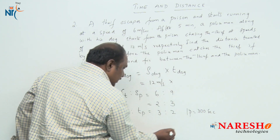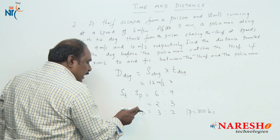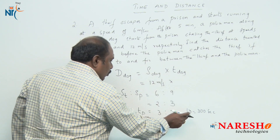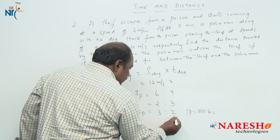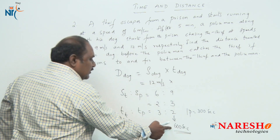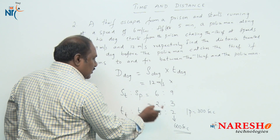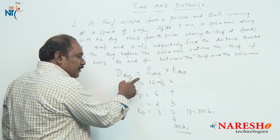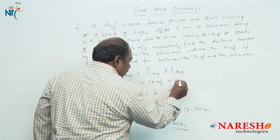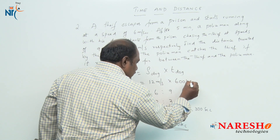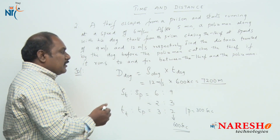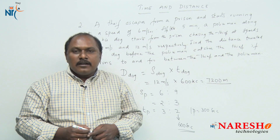So 1 part equals 300 seconds. We need the time taken by the policeman, which is 2 parts, so 2 × 300 = 600 seconds. The policeman catches the thief after 600 seconds, and the dog also runs for 600 seconds. Therefore, the distance travelled by the dog is 12 × 600 = 7200 meters. These are the two methods by which we can answer this particular question.